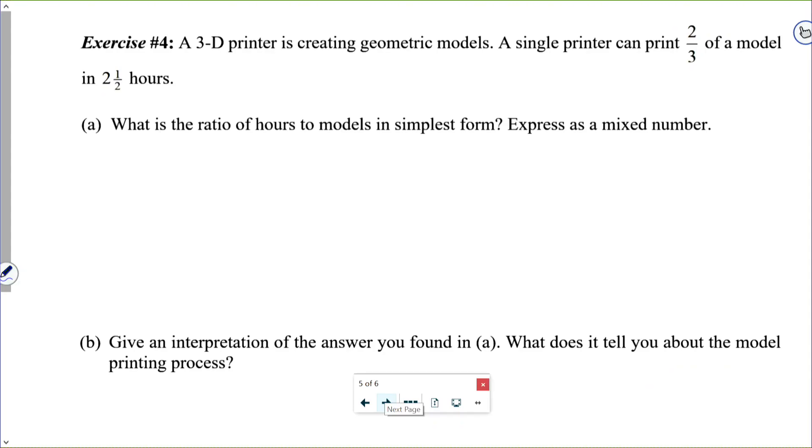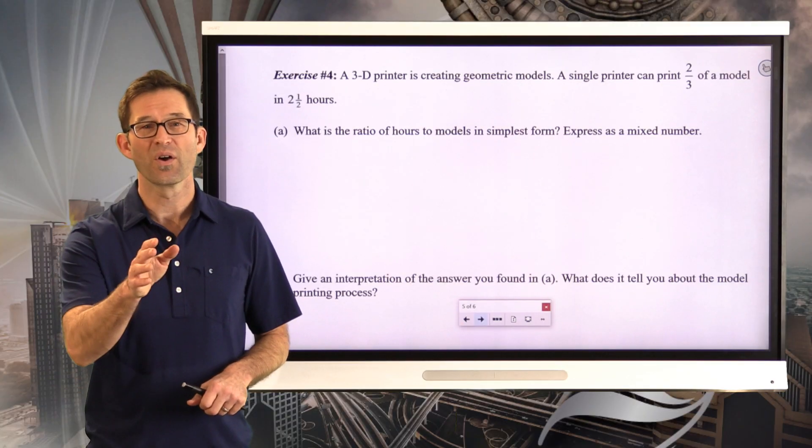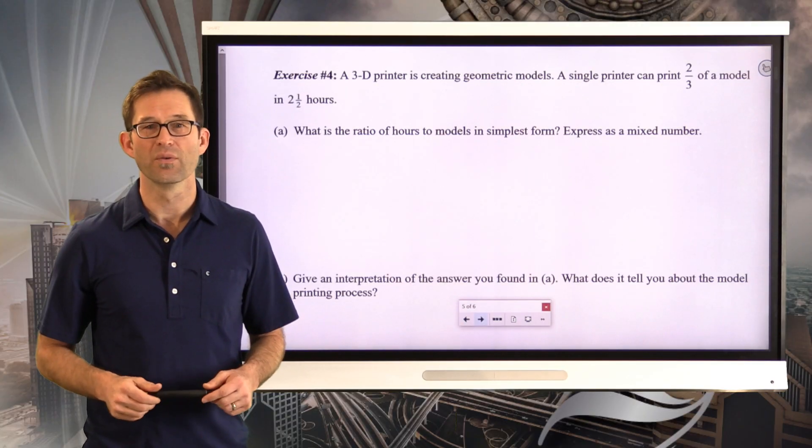A 3D printer is creating geometric models. A single printer can print two-thirds of a model in two and a half hours. What is the ratio of hours to models in simplest form expressed as a mixed number? Why don't you go ahead, pause the video now, and see what you can find here.